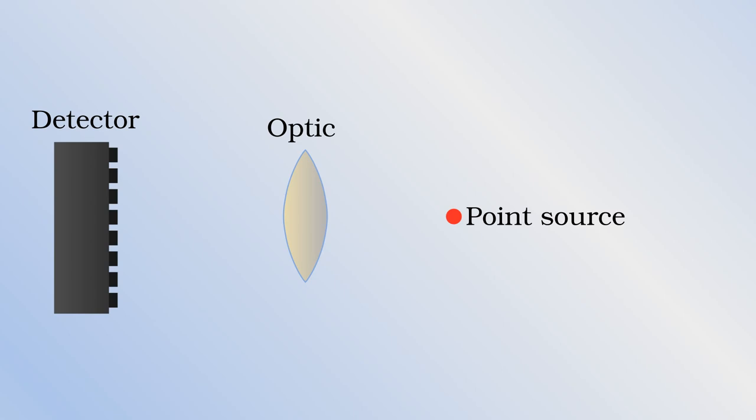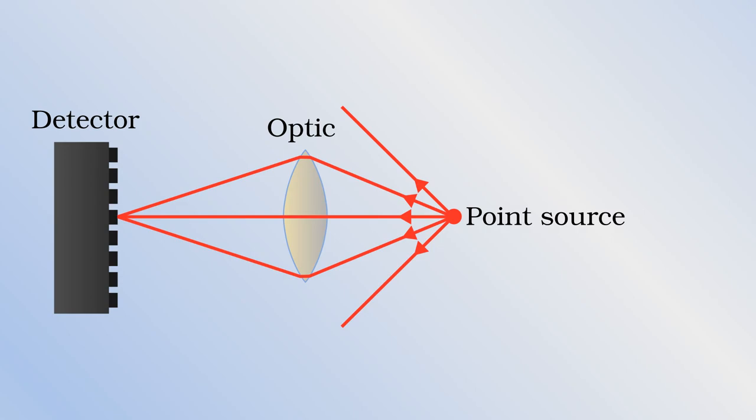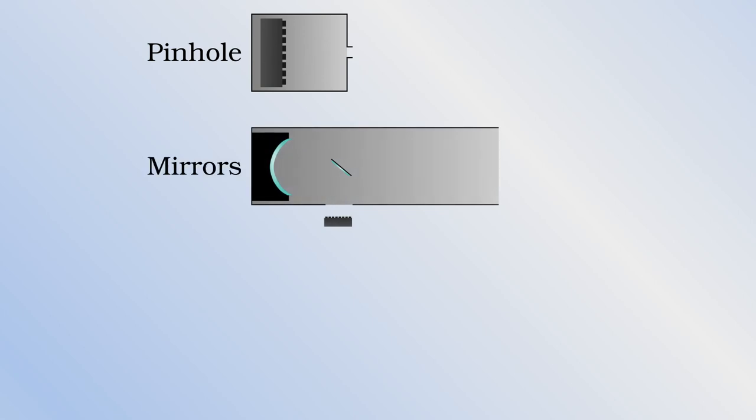The other major challenge is to create an optic which will focus these types of waves. I have made a video about how optics work, link on the screen and in the description, but to summarize, an optic is a device which takes rays spreading out from a distant point of light and focuses them to a point on a detector. The three most common types are pinhole cameras, reflecting telescopes, and lenses.